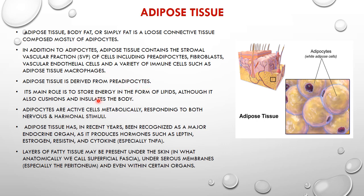Adipose tissue is derived from pre-adipocytes, which are precursors derived from mesenchymal cells, which is a pluripotent tissue. The main function of fat cells or adipocytes is to store energy in the form of lipids, and they also form cushions and insulate the body. These adipocytes respond to both nervous and hormonal stimuli. In recent years, adipose tissue has gained much attention from researchers because of certain hormones they secrete, such as leptin, estrogen, resistin, and cytokines.